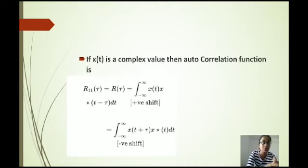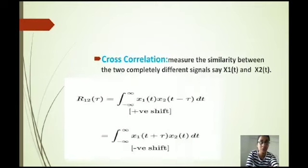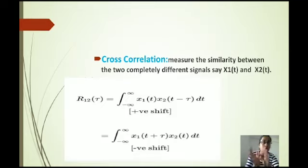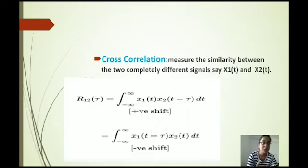Cross correlation is a measure of similarity between two completely different signals, say x1 and x2. So R12 equals the integral from minus infinity to infinity of x1(t) · x2(t minus tau) dt in case of positive shift, and in case of negative shift it is the integral from minus infinity to infinity of x1(t plus tau) · x2(t) dt.